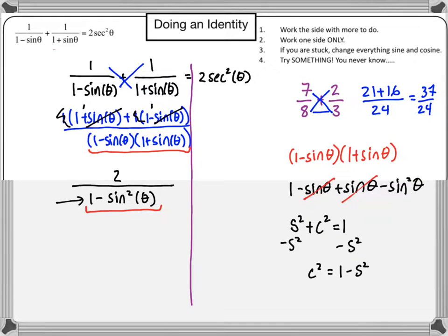So I know that that bottom part just equals the cosine squared. So I'm going to rewrite that as 2 over cosine squared theta.